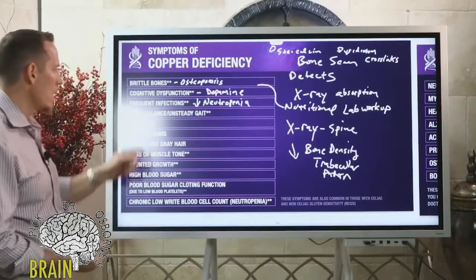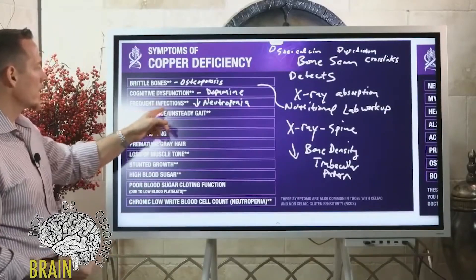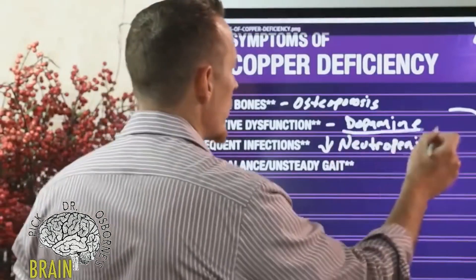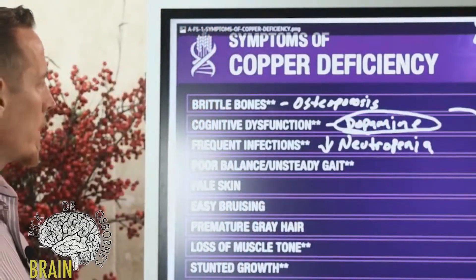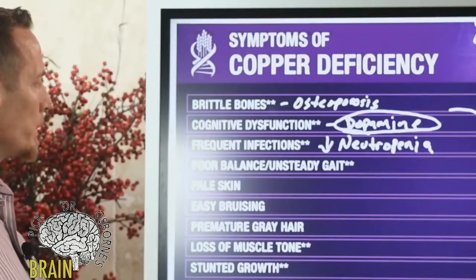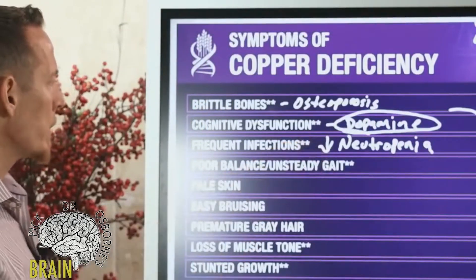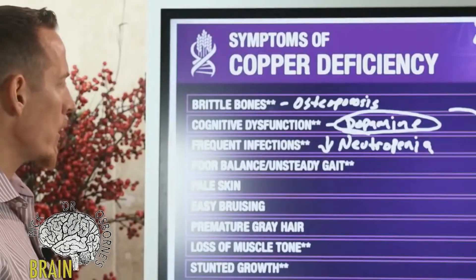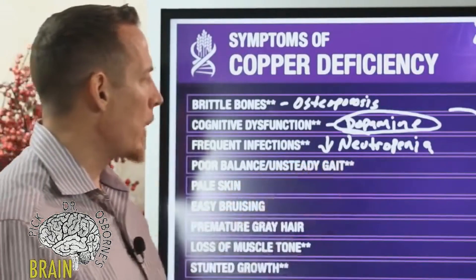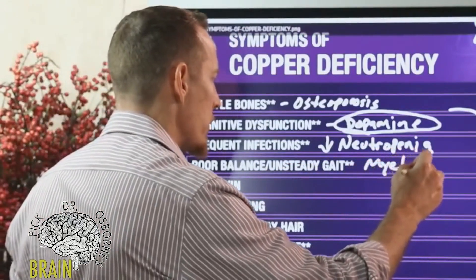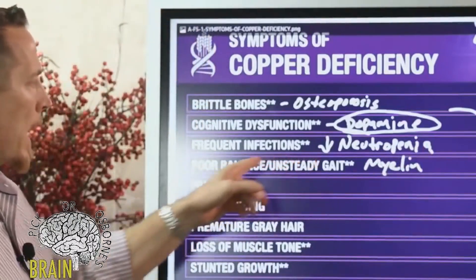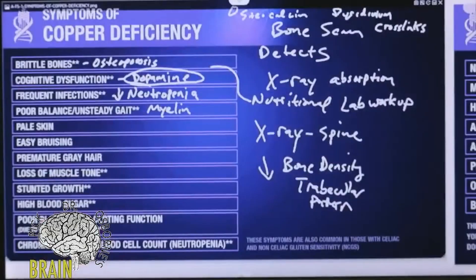Poor balance and unsteady gait are also symptoms. Copper plays a role in neurological function — it's necessary for myelin production. When we start to lose that myelin sheath, the nerves that give us position sense and balance start demyelinating, and we become ataxic or lose our balance. Pale skin is another symptom, because copper is necessary to help produce melanin pigment in the skin.